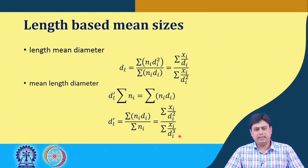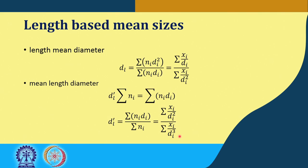We will see how these expressions are used in worked-out examples, where you will be given x_i and d_i values or n_i and d_i values — for instance, 100 particles of 1 micron, 50 particles of 200 micron, 70 particles of 30 micron — and asked to calculate the mean diameter based on a certain criteria: length, volume, or surface. We will be seeing that in the coming classes, and that is all for now. Thank you for your attention.